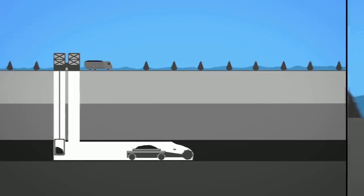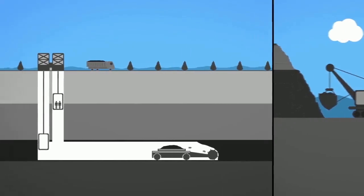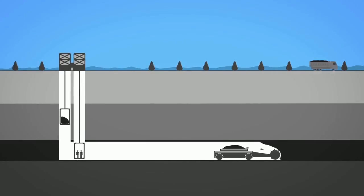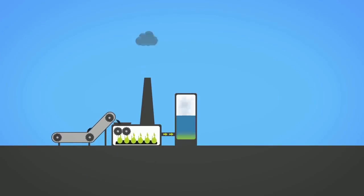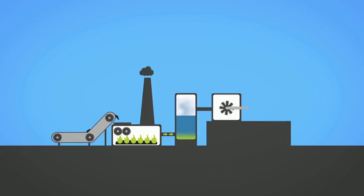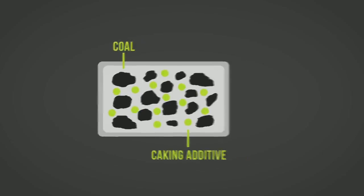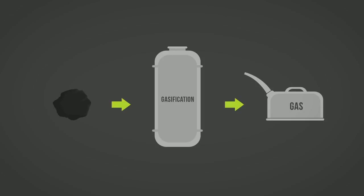Coal is extracted from the earth through underground mining or surface mining. The choice of mining method is largely determined by the geology of the coal deposit and its distance from the surface. To convert thermal coal to electricity, it is first milled to a fine powder, which increases the surface area and allows it to burn more quickly. The hot gases and heat energy produced from combustion convert water into steam to run a turbine and generator.